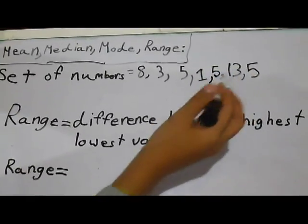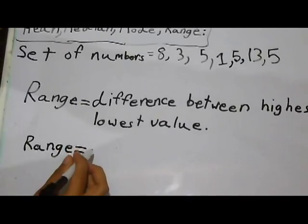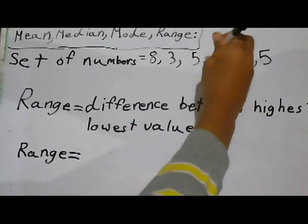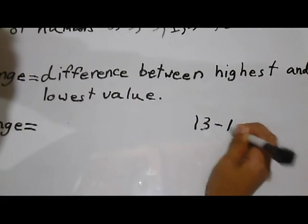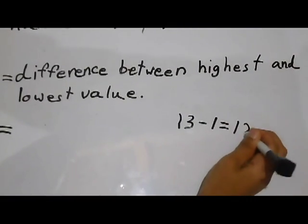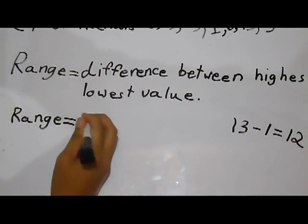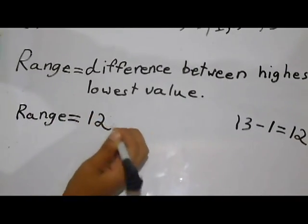Except the other numbers, like 14. So, the range, let's figure it out. It's 13 minus 1. 13 minus 1 equals 12. So, the range would be equal to 12. Thanks for watching.